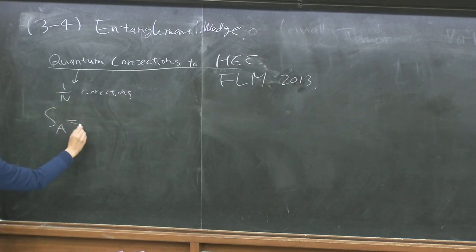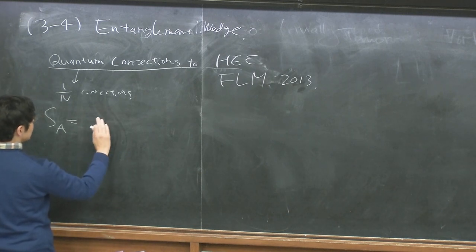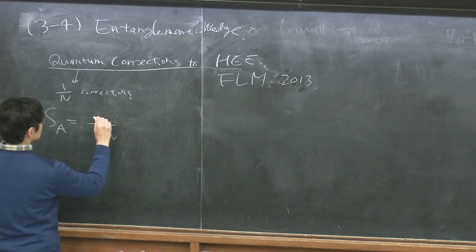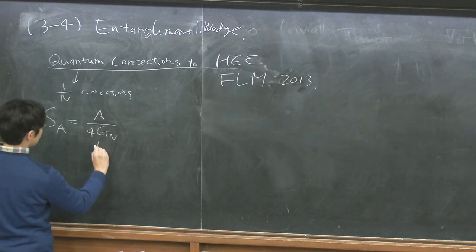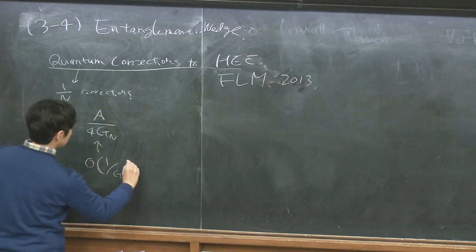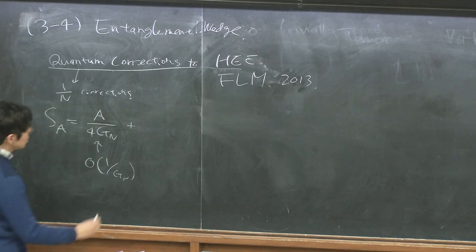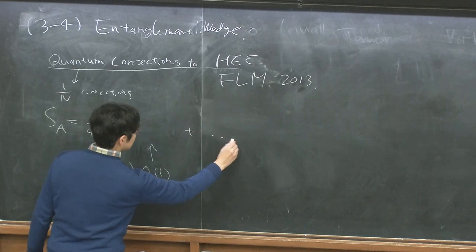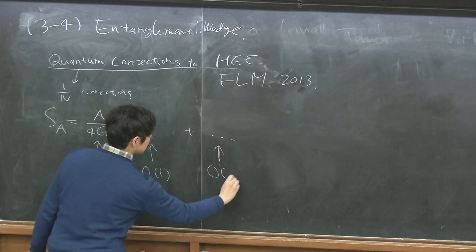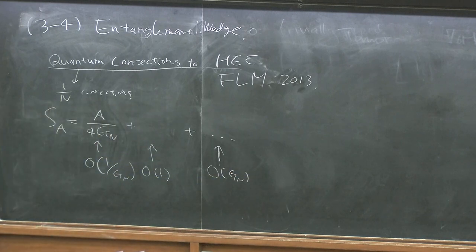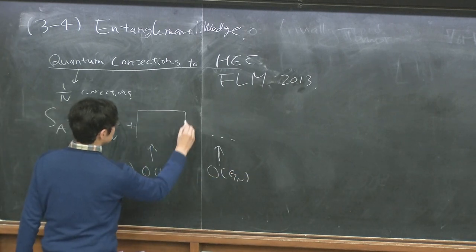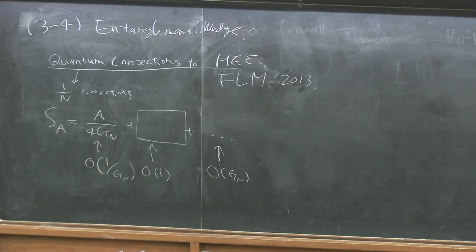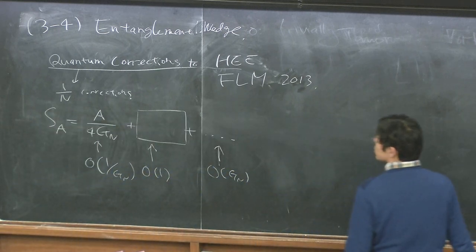We have entanglement entropy, and the previous classical formula computes the leading term, which is the area term of order 1/G_Newton. There is a next-to-leading contribution which is order one, and higher terms of order G_Newton to some power. We are interested in this next-to-leading contribution in the 1/N expansion, or equivalently the Newton constant expansion.